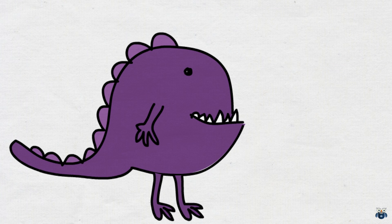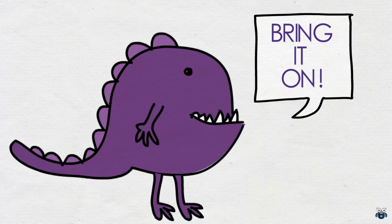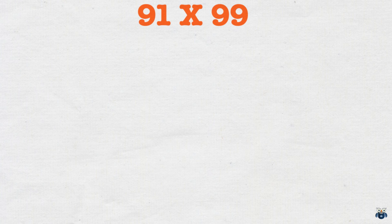Alright with this point in mind let's jump right in and watch this fantastic method in action. What is 91 times 99? The first thing we do is look at each number and determine how big or small it is from 100. 91 is 9 less than 100 and 99 is 1 less. We then write this down.